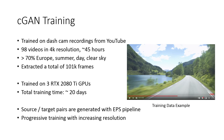The Pix2Pix network requires pairs of images from the source and the target domain for training. Since we have an automated pipeline for the EPS map generation, those pairs are readily generated from the video frames and no manual labeling is involved in the process. To enhance the results, the network is trained with progressively increasing resolution.